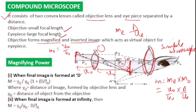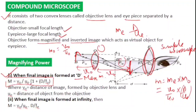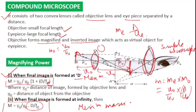For the compound microscope, for maximum magnification (image at D): m = (v₀/u₀)(1 + D/f_e), where f_e is the focal length of the eyepiece. For minimum magnification (image at infinity): m = (v₀/u₀)(D/f_e). You must remember these two formulas.